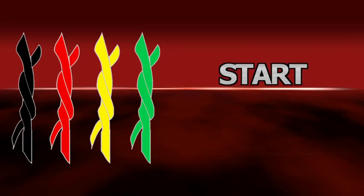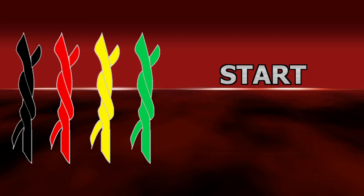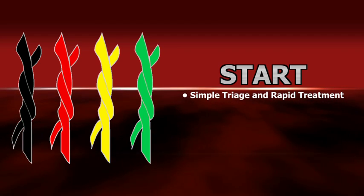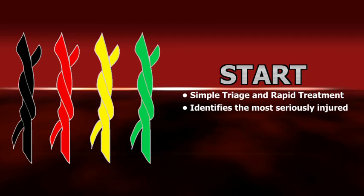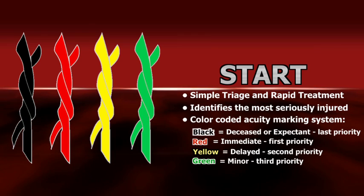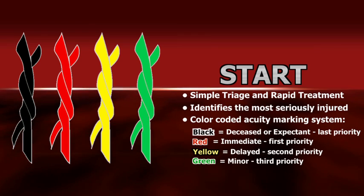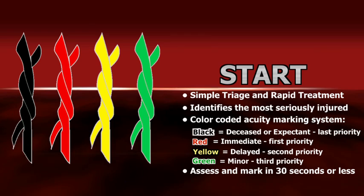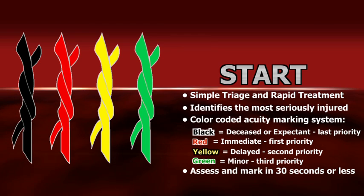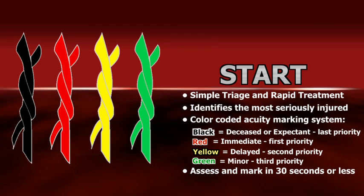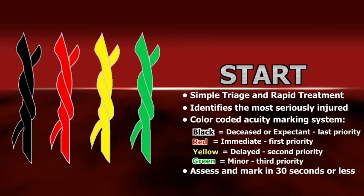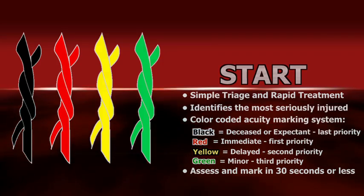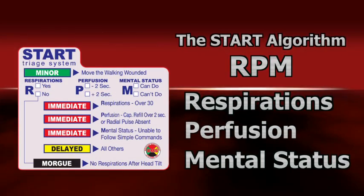The concept of triage is simply a method of quickly identifying victims who have immediately life-threatening injuries and who have the best chance of surviving, so that when additional rescuers arrive on scene, they are directed first to those patients. The START triage system relies on making a rapid assessment of every patient and marking them with one of four colored acuity categories. Each assessment should take no longer than 30 seconds.